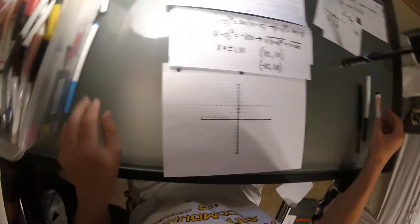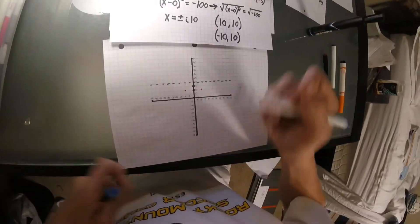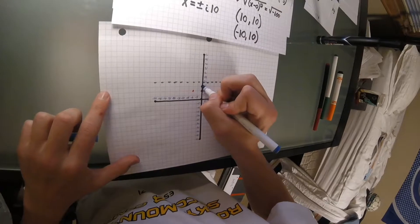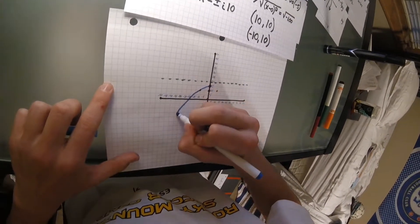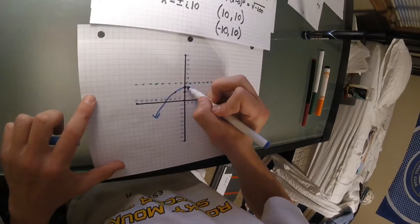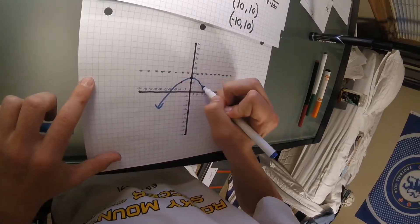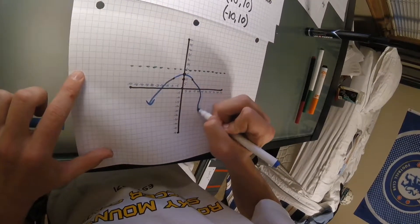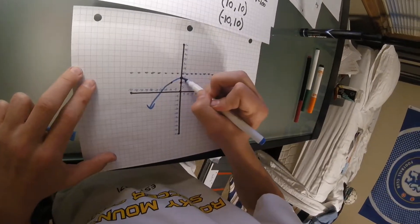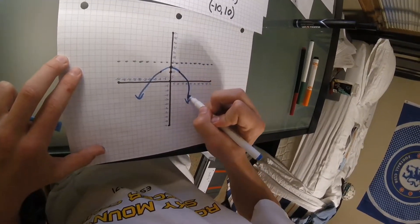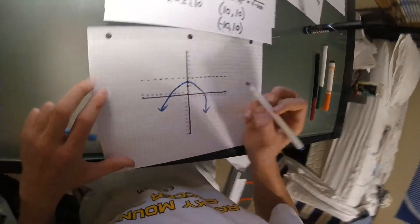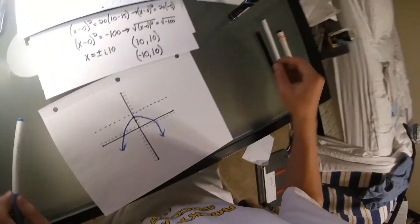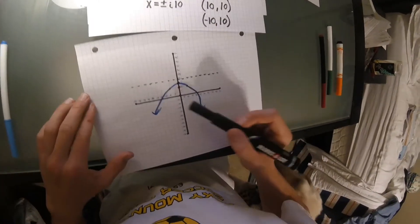Now, we're going to draw our line from our vertex, through our point, and continue through the x axis. We're going to do that on the opposite side as well. And there we have it.